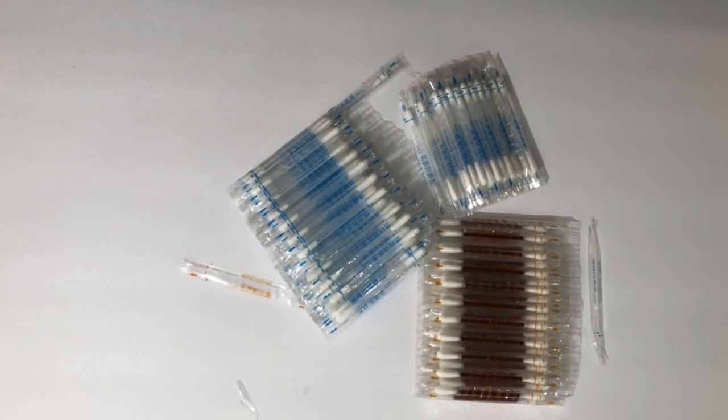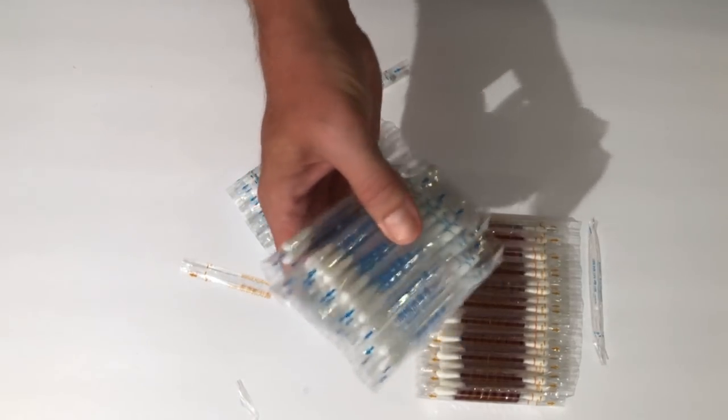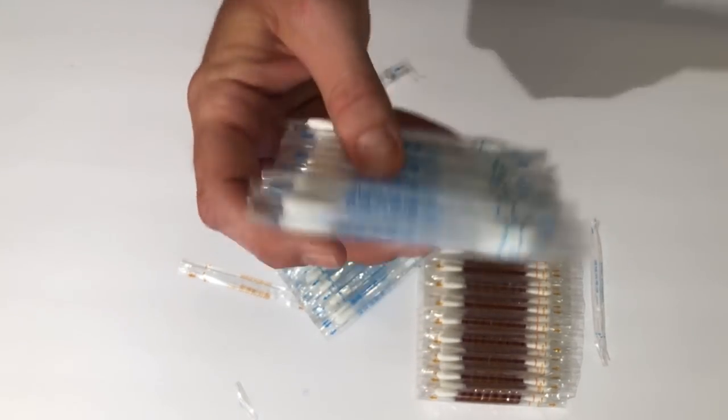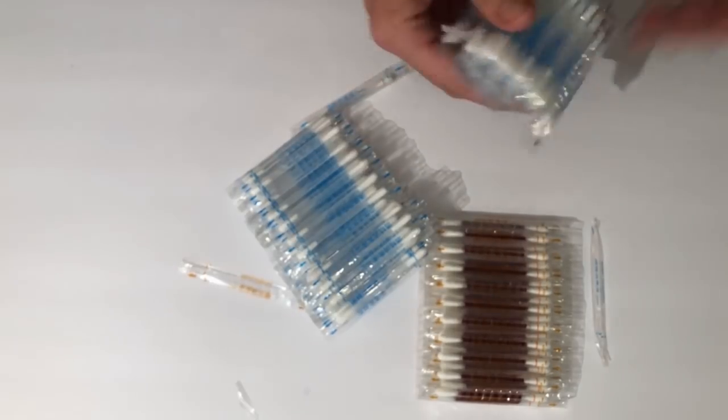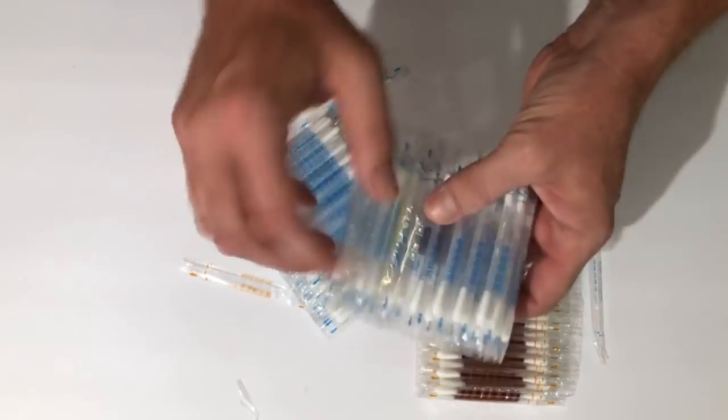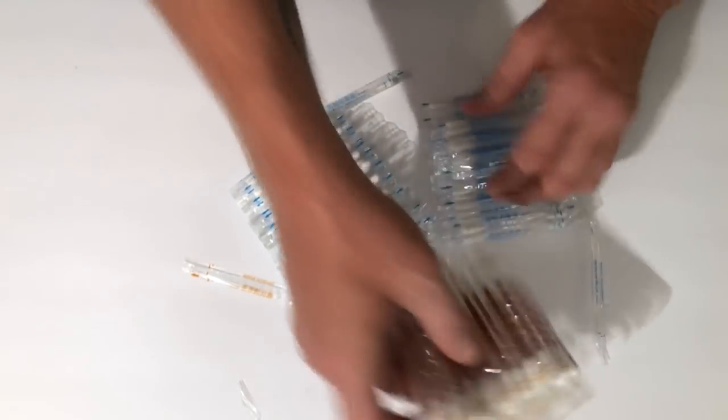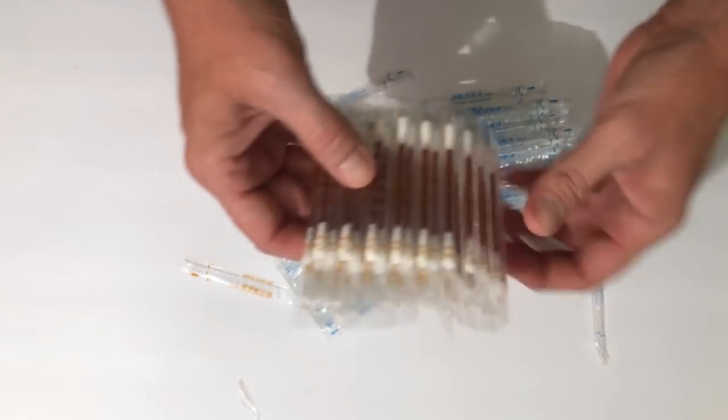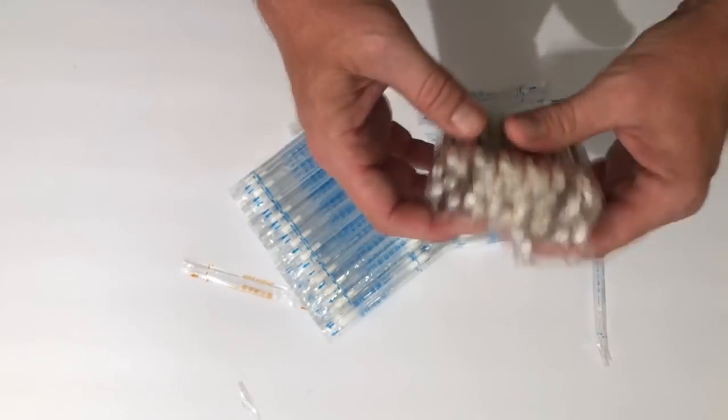When putting together a first aid kit, this is something that you could take into account and could consider putting in. But the only drawback to these is what we saw: if they do get crushed, then the alcohol is going to leak out, and the same with the iodine here. If they do get crushed, the iodine is going to leak out. But that would just illustrate the need to keep these in some type of sturdy little box or sturdy little container.